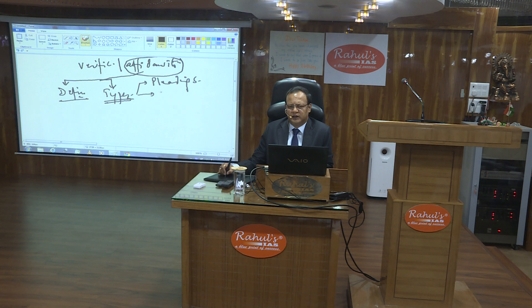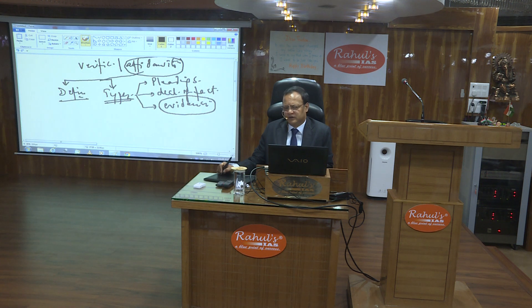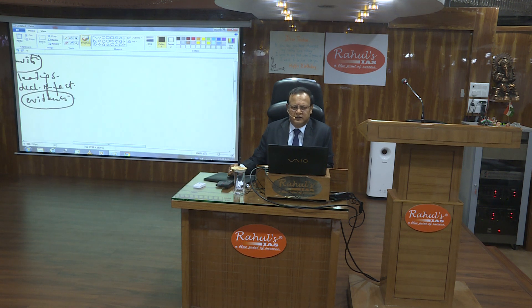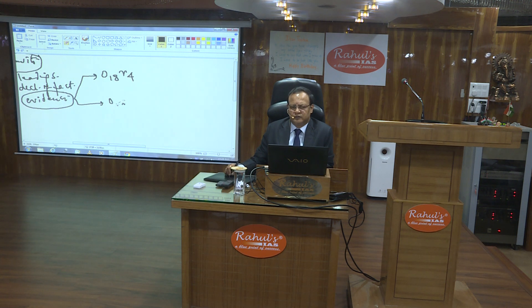The first type is the affidavit with pleadings. The second is the affidavit as a declaration of a fact which may not accompany the pleadings. The third is affidavits in the form of evidence, which led us into further details — for that purpose I picked up Order 18 Rule 4 and Order 19.